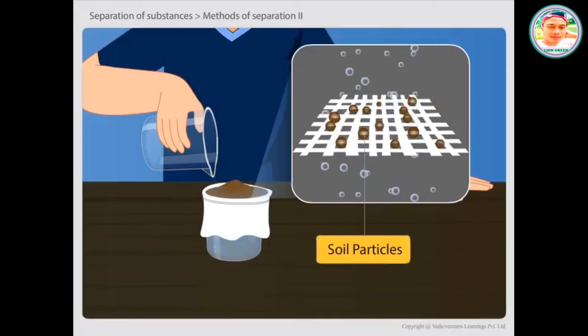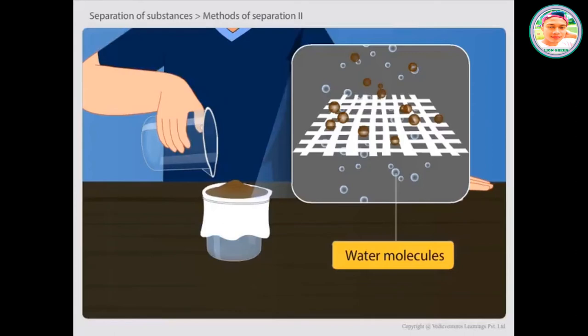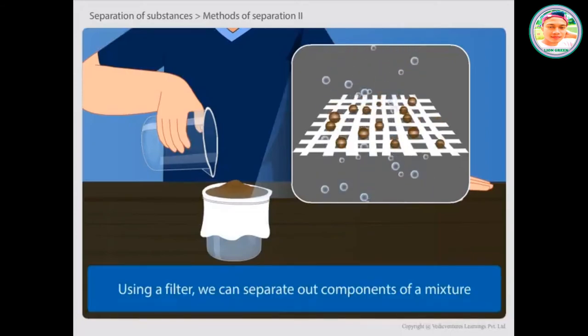The soil particles are bigger in size than these pores. So they cannot pass through these pores and remain in the cloth. While water molecules being smaller than the pore size of the cloth can easily pass through the cloth. Thus, by using a filter, we can separate out components of a mixture.